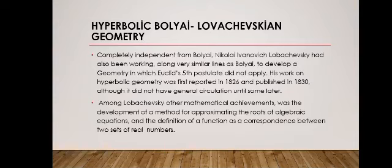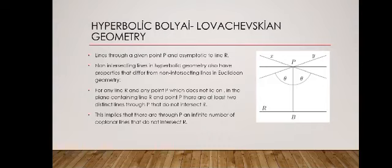His work on hyperbolic geometry was first reported in 1826 and published in 1830, although it did not have general circulation until some time later. Among Lobachevsky's other mathematical achievements was the development of a method for approximating the roots of algebraic equations and the definition of a function as correspondence between two sets of real numbers. This is an example image about the Hyperbolic-Bolyai-Lobachevskyan geometry and the method used by Lobachevsky.